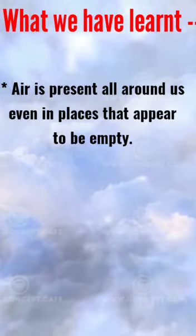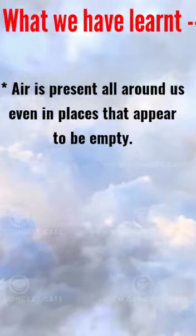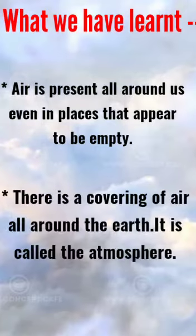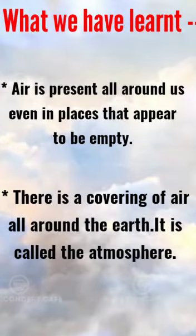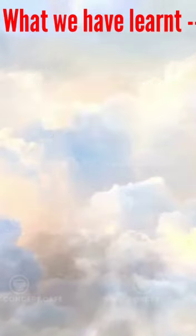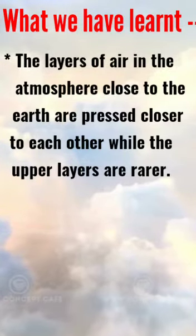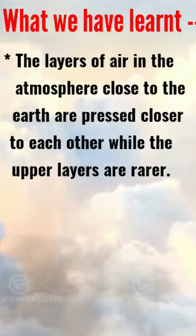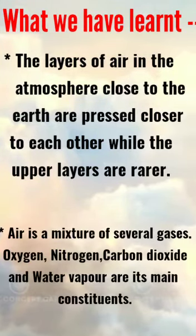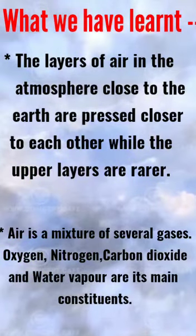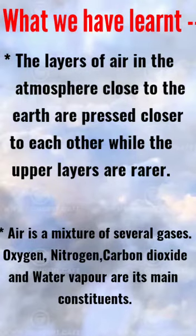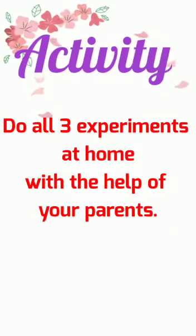Let's see what we have learned. First: air is present all around us, even in places that appear to be empty. Second: there is a covering of air all around the earth called the atmosphere. Third: the layers of air close to the earth are pressed closer to each other while the upper layers are rare. Fourth: air is a mixture of several gases — oxygen, nitrogen, carbon dioxide, and water vapor are its main constituents. Activity for today: do all three experiments at home with the help of your parents.